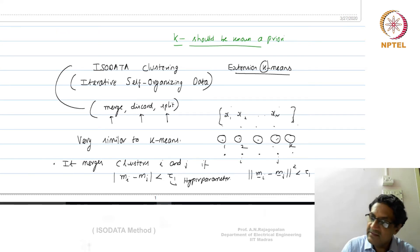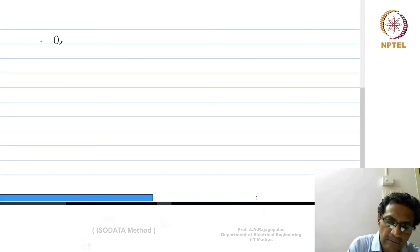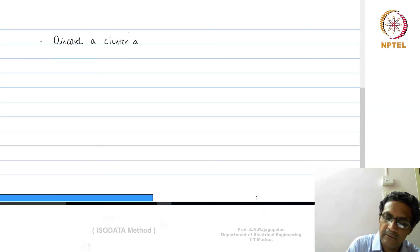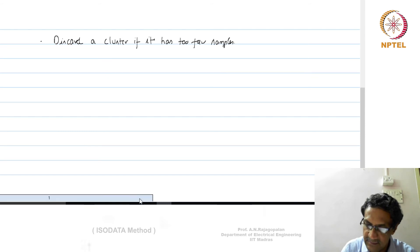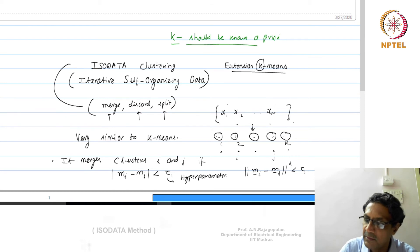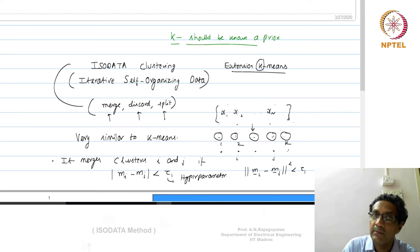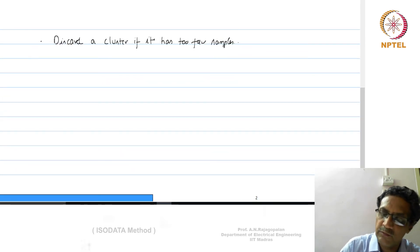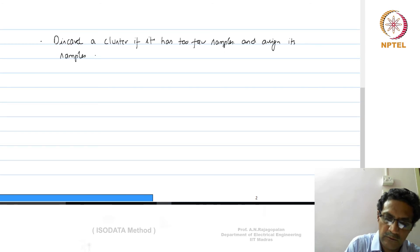Discard means removing a cluster if it has too few samples. If a cluster has very few samples compared to others, we simply remove it from the grouping — K comes down by one — and reassign those samples to other clusters using a similarity metric like Euclidean distance.